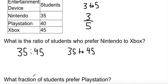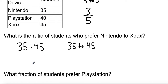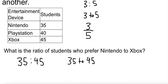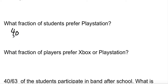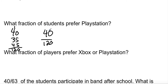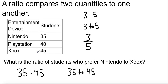The next question asks what fraction of students prefer PlayStation. I need to know how many students prefer PlayStation — that's 40 — and how many students there are in total. So I also count the students who prefer Nintendo (35) and Xbox (45). Adding 40 plus 35 plus 45 gives me 120 total students. So 40 out of 120 students prefer PlayStation, because we're comparing PlayStation to every student at the school.